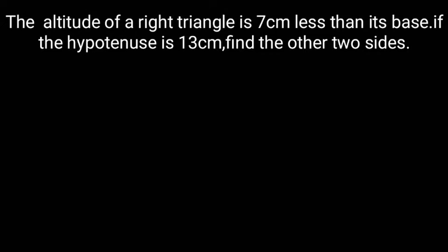The altitude of a right triangle is 7 cm less than its base. If the hypotenuse is 13 cm, find the other two sides.